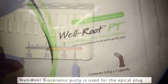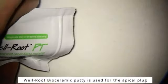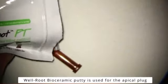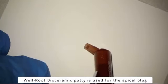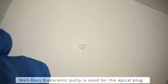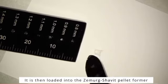We are now ready to load the pelletformer, and in this case I'm using Wellroot PTE bioceramic putty. The pelletformer is then loaded to our desired diameter. Again, in our case, it's 90.